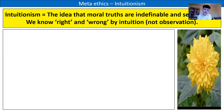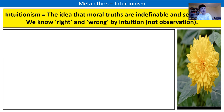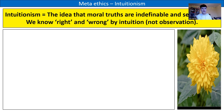That leads us nicely to G.E. Moore's own answer to the question of what is the good: intuitionism. Intuitionism is the idea that moral truths are indefinable and self-evident — we don't discover them through observation but by intuition. We know right and wrong by intuition. The key example is the colour yellow. Moore says the colour yellow, like goodness, is a simple concept — indefinable and self-evident. When we see the colour yellow, we can instantly identify it, but if someone asks us to explain what yellow is, we just have to say, well, it's yellow. We can see it but can't describe it.